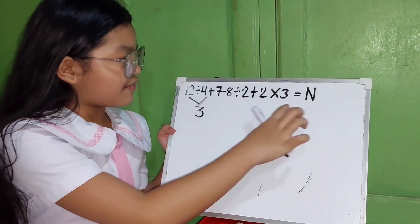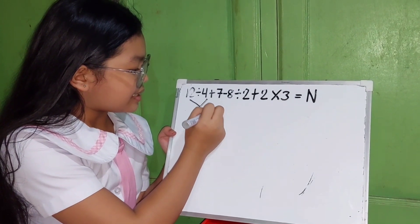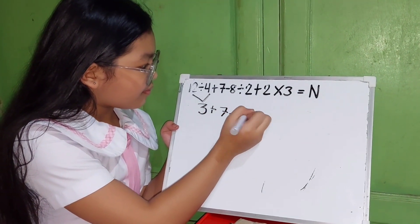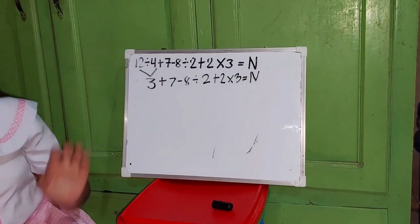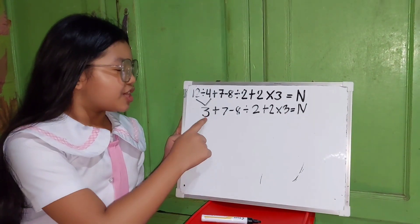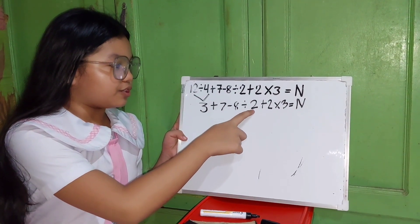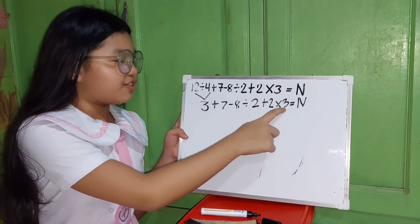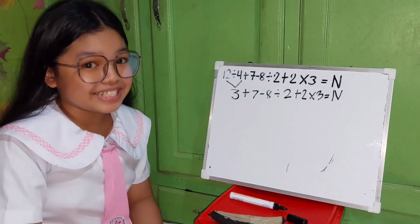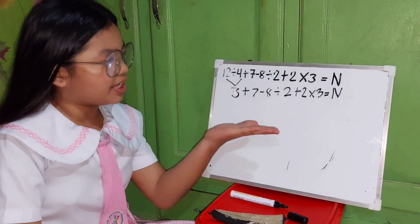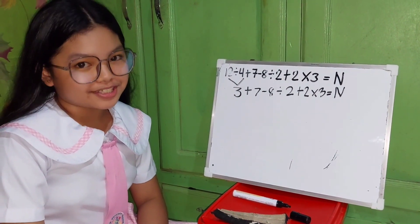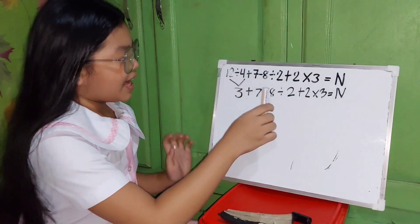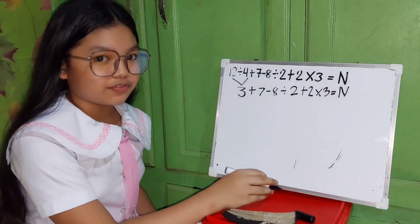Then copy the rest: plus 7. So here it is: 3 plus 7 minus 8 divided by 2 plus 2 times 3 equals n. Since we can still see division here, we will divide it first. 8 divided by 2 equals 4.